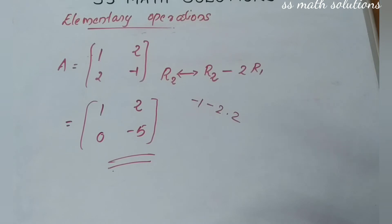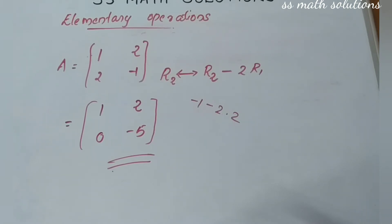These three properties can be applied to both rows and columns, giving six elementary operations in total. For finding the inverse, two important points: first, the matrix must be a square matrix — only then can we find the inverse. Second, if B is the inverse of A, then A is also the inverse of B — both are the same.